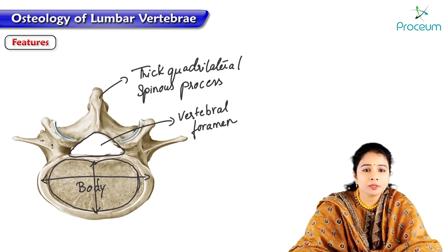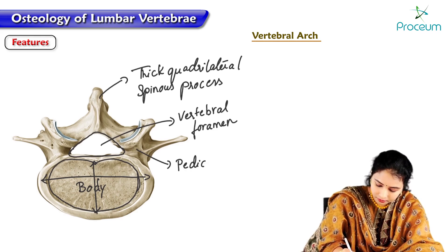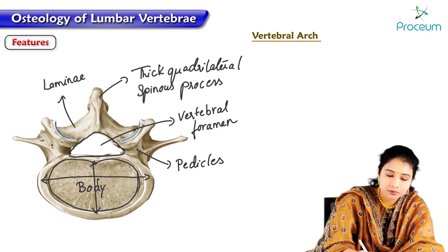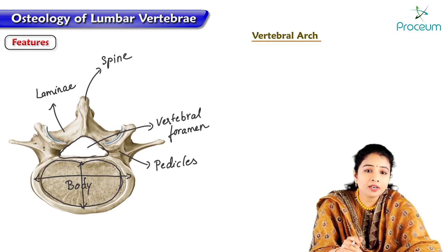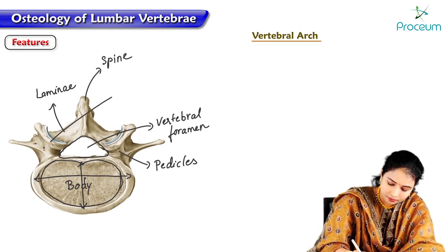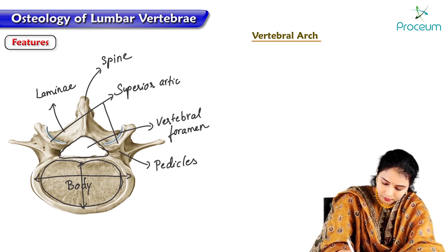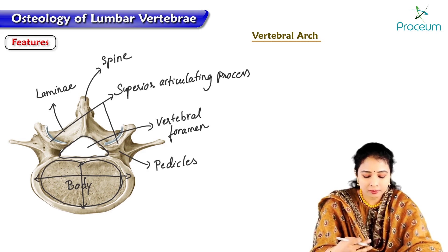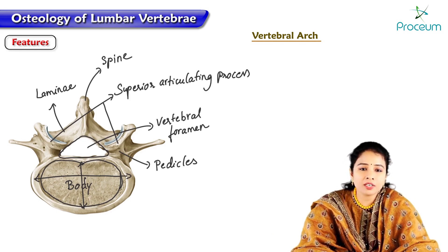Regarding the vertebral arch: it is made of pedicles, laminae, spine, and superior and inferior articulating processes. We can see the superior articulating processes in the superior view. There are also two inferior articulating processes bearing facets called superior and inferior articulating facets.